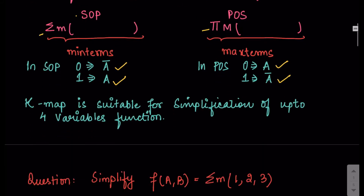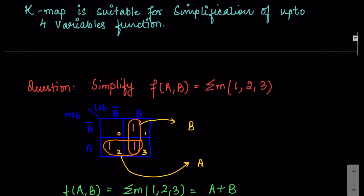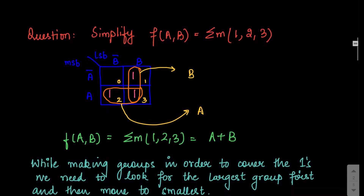K-map is suitable when you are doing simplification of functions up to 4 variables. So let's get started with an example. We have to simplify a function f(a, b), which is a 2-variable function in SOP form, and the min terms are 1, 2, and 3.